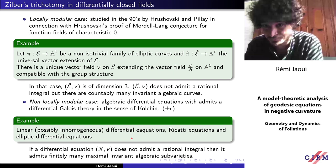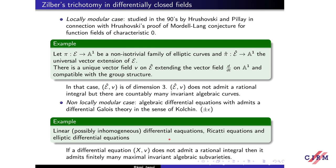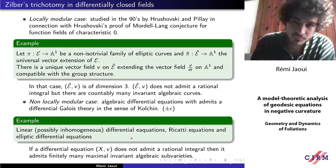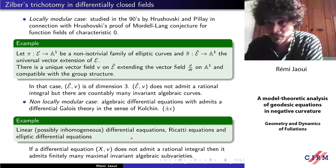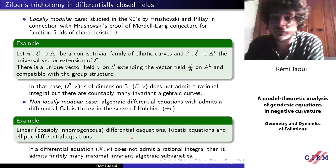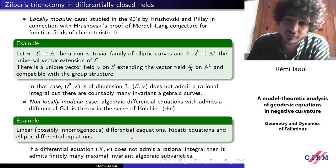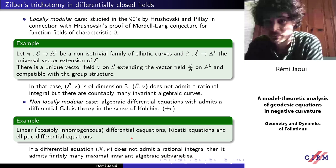The simplest equation of this form: you start with a non-isotrivial family of elliptic curves, look at the universal vector extension, and there's a unique vector field compatible with the group structure which extends the vector field d/dt on A1. From the model-theoretic perspective, they are characterized by structural properties. For example, the equation I define is of dimension three, doesn't have a rational integral, but admits countably many invariant algebraic curves.